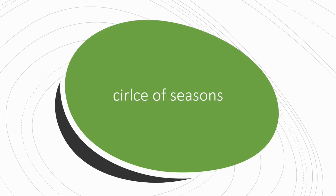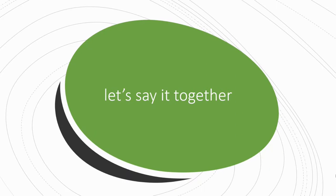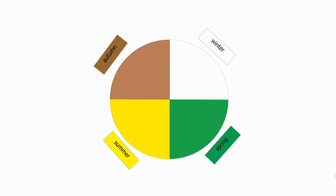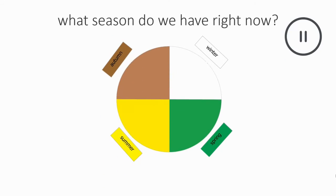Let's work with our circle of seasons. Now let's remind ourselves what seasons do we have. Let's say it together: Spring, Summer, Autumn, Winter. What season do we have right now? Spring.